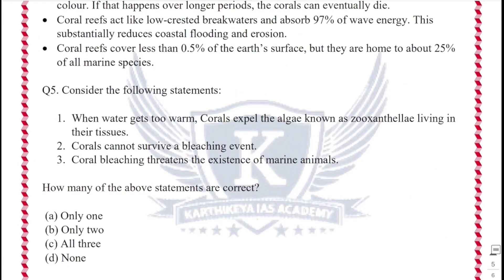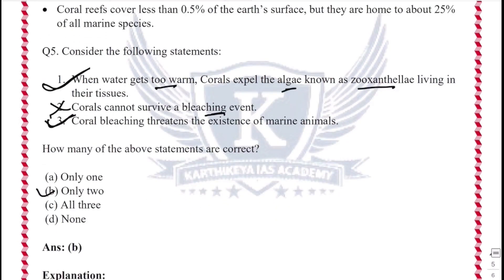Question 5: Consider the following statements. Statement 1: When water gets too warm, coral expels algae known as zooxanthellae living in their tissues — this is correct. Statement 2: Corals cannot survive a bleaching event — this is not correct because corals can survive bleaching but are under stress and subject to mortality. Statement 3: Coral bleaching threatens the existence of marine animals — this is correct because 25% of all marine species depend on coral reefs. Statements 1 and 3 are correct, so only two statements are correct.